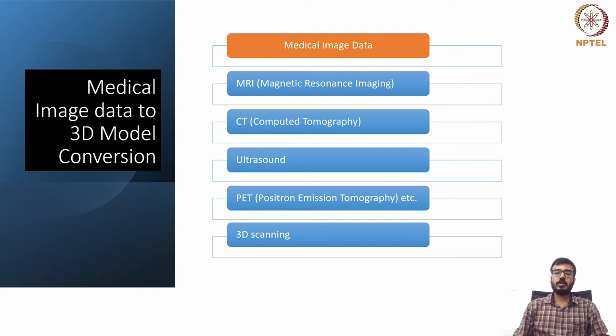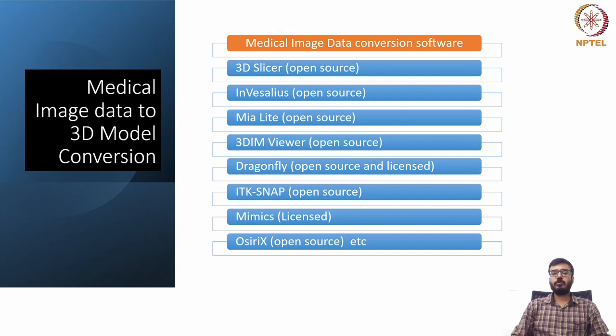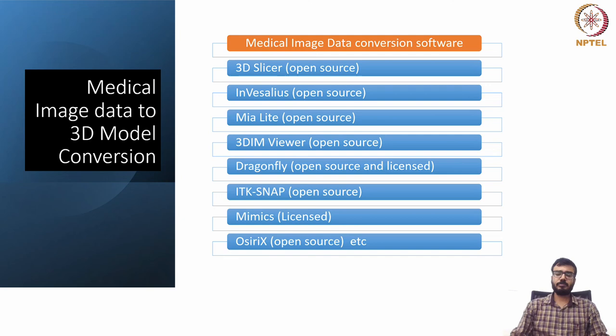Now we will see what are the available tools using which we can convert medical image data to 3D models. We have both open source and licensed softwares available. Some of the softwares listed are: 3D Slicer, InVesalius, Alias, Mia-lite, 3D Viewer, Dragonfly, ITK-SNAP, Mimics, Auxerix, etc. One of the most commonly used softwares is 3D Slicer, which is an open source software.